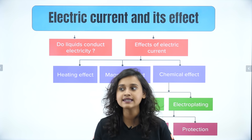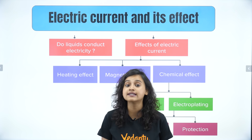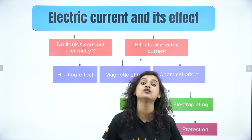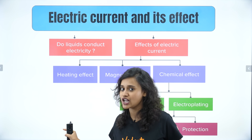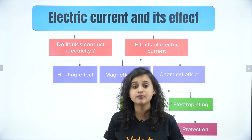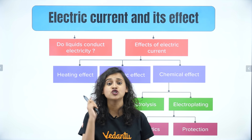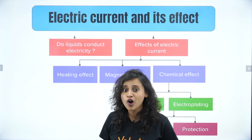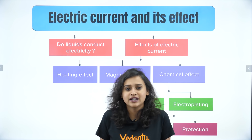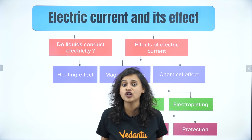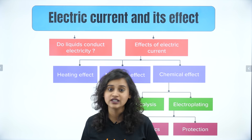Now let's start with Class 8 standard — electric current and its effects. First question: do liquids conduct electricity? Yes, but not all liquids. Most liquids that conduct electricity are solutions of acids, bases, and salts. If you take distilled water, which has no minerals, it will not conduct. But if you add a little salt to that distilled water, it will start behaving like a conductor. For a liquid to be a conductor, you need mobile ions that can carry charge from one place to another.